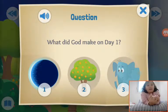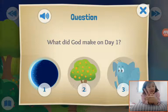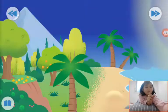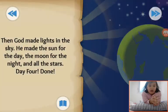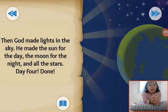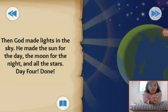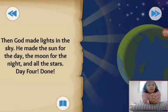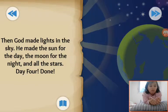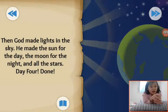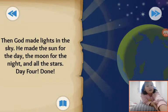There's a question: what did God make on day one? Number one — light. Number two — trees. Number three — animals. Then God made lights in the sky. He made the sun for the day, the moon for the light, and all the stars. God made lights in the sky, and He made the sun, moon, and stars for the night. Day four, done!